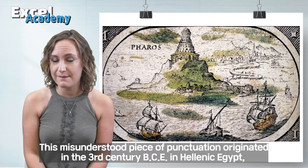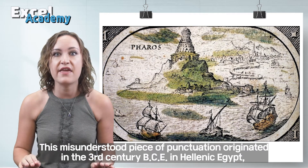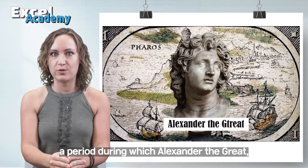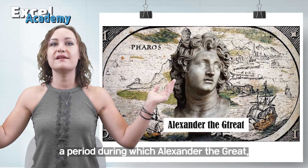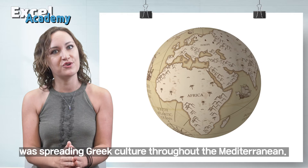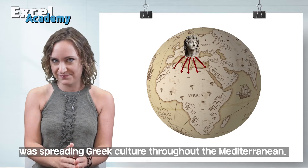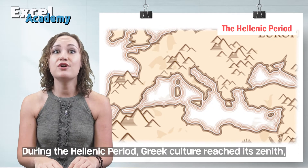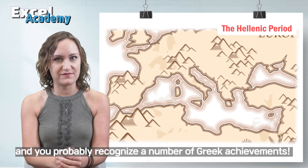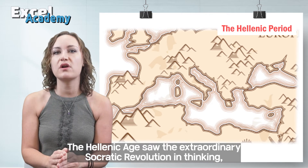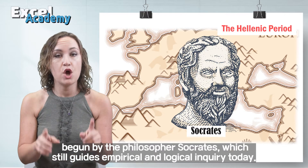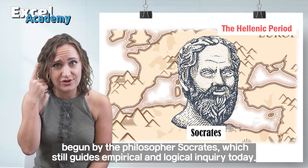This misunderstood piece of punctuation originated in the 3rd century BCE in Hellenic Egypt, a period during which Alexander the Great, one of the most powerful generals in history and a philhellene, was spreading Greek culture throughout the Mediterranean. During the Hellenic period, Greek culture reached its zenith, and you probably recognize a number of Greek achievements. The Hellenic Age saw the extraordinary Socratic Revolution in thinking, begun by the philosopher Socrates, which still guides empirical and logical inquiry today.